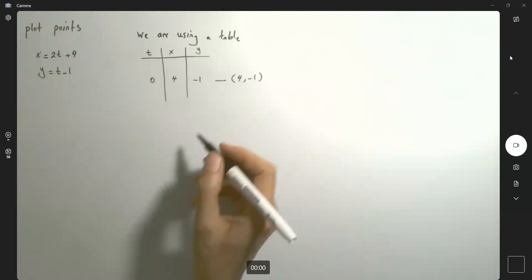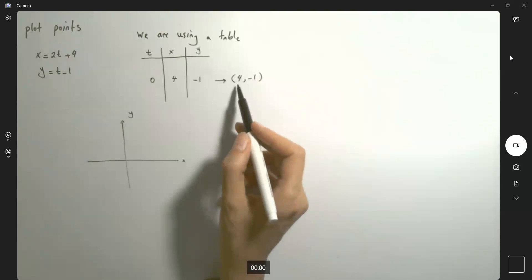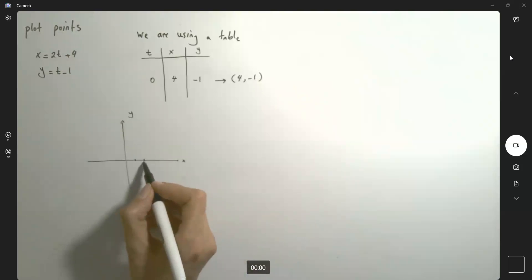So here we can start graphing this. You have x and you have your y. So 4 and negative 1 - one, two, three, four, and negative 1. This is the very first point.